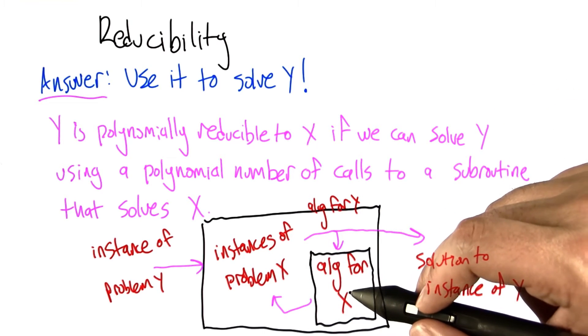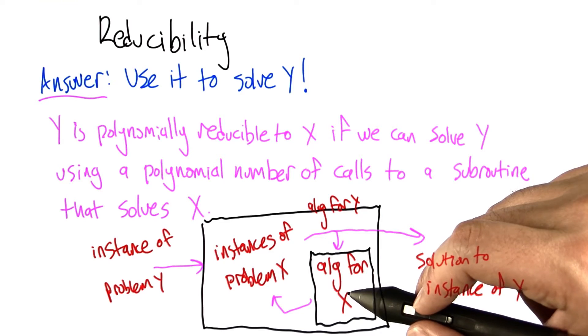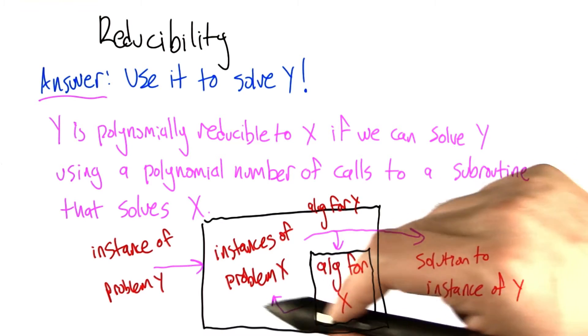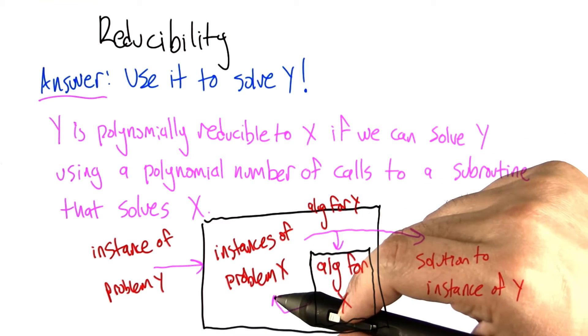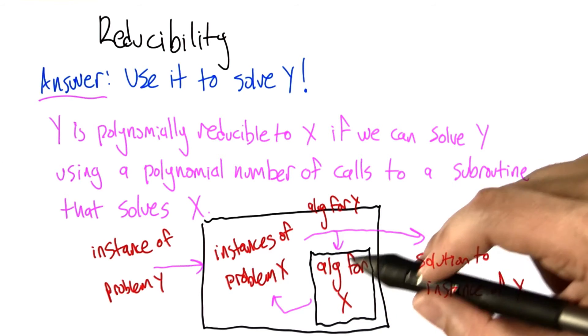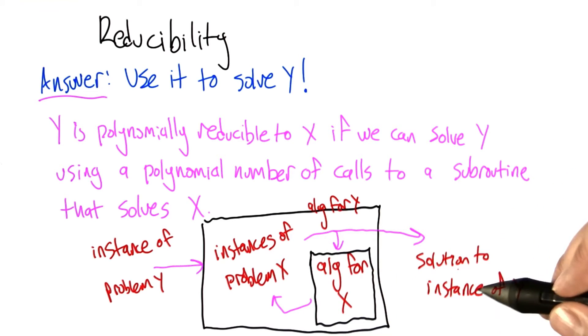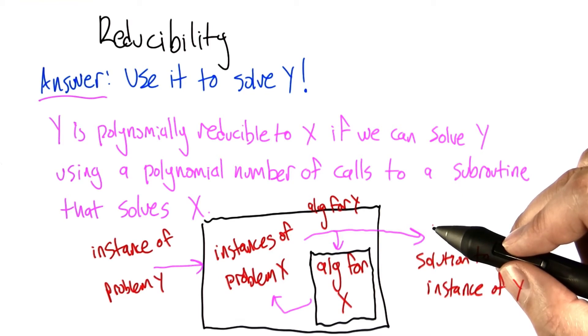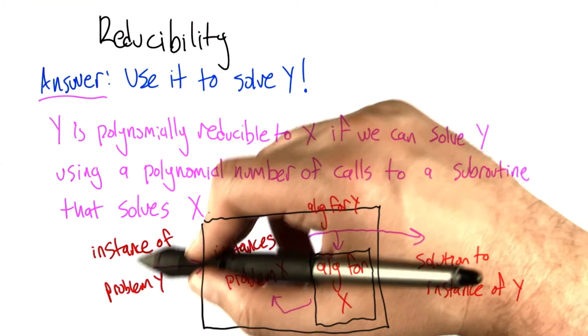Then we run an algorithm for solving problem x to get solutions to those, and maybe that generates more instances, but after a polynomial number of calls to this algorithm, what comes spitting out is a solution to the original instance of problem y.